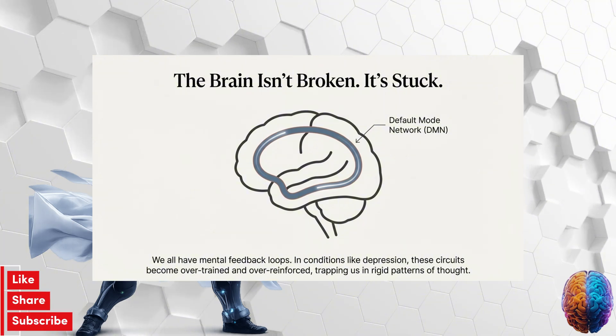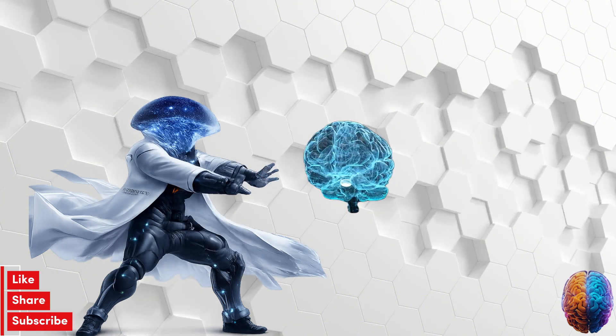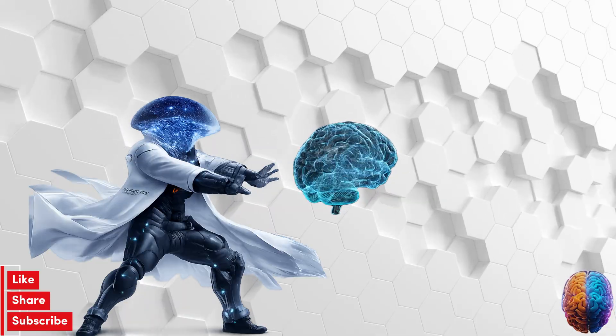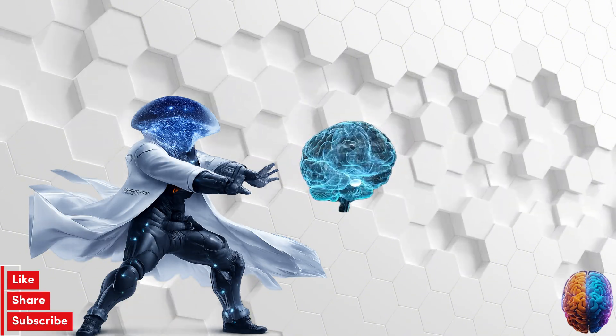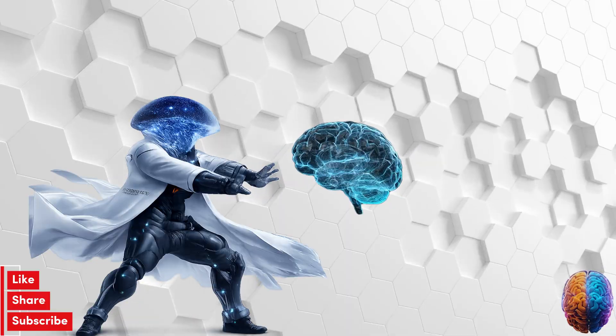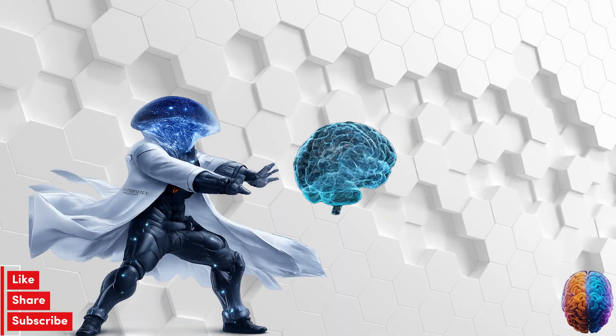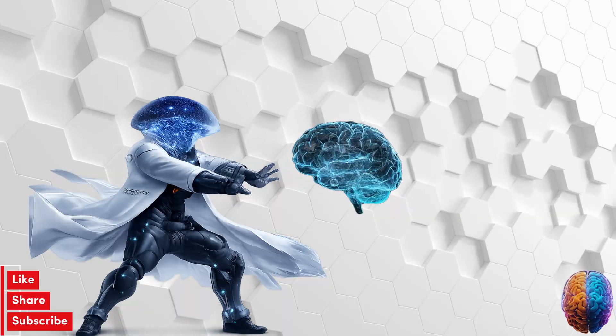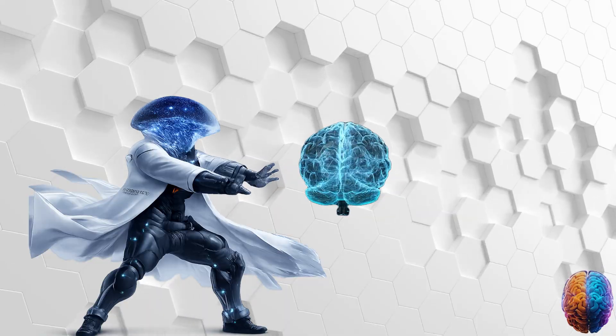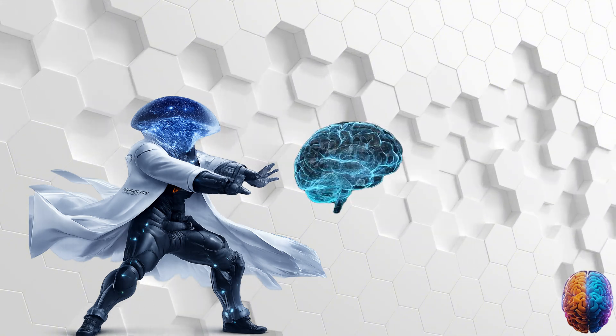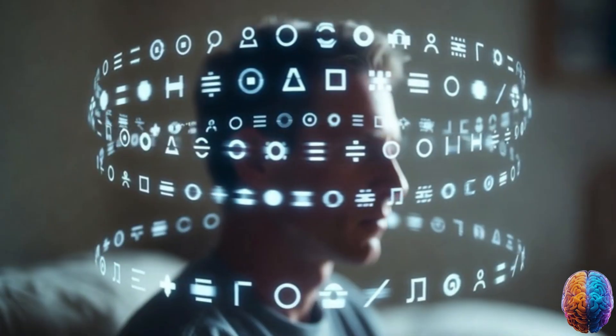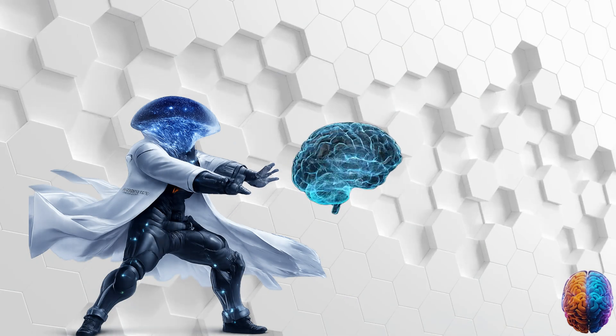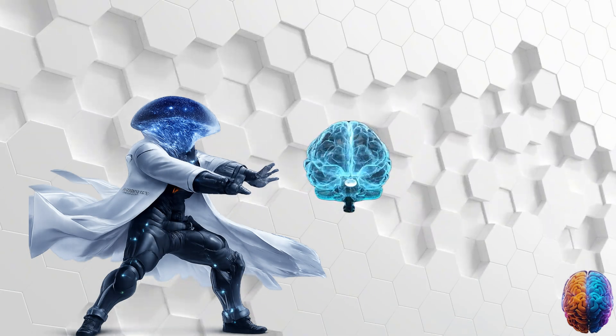And the main player here is a network called the default mode network, or the DMN. Think of it like the brain's screensaver, or its idle mode. It's what's running when you're not focused on a task, when you're just daydreaming or thinking about yourself. So it's where your inner monologue lives. Exactly. It's where your sense of self resides, where you process memories. It's not a bad thing. We need it. But in things like severe depression, or anxiety, or even addiction, that network becomes hyper-connected. It gets over-trained, stuck in these really rigid self-referential feedback loops. So instead of helping you reflect, it just becomes an engine for rumination. The same negative thoughts over and over.